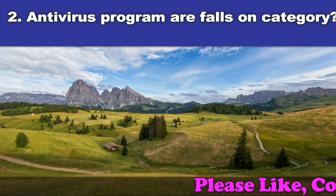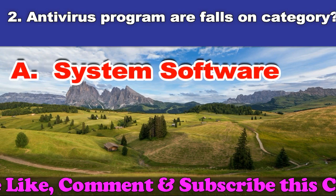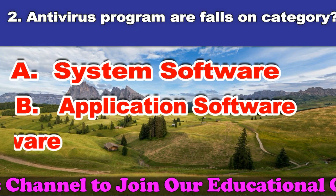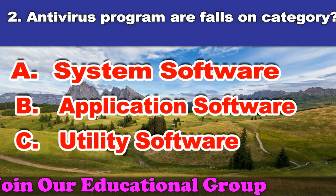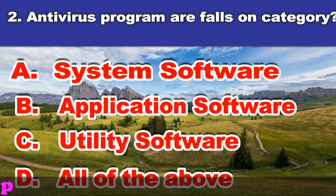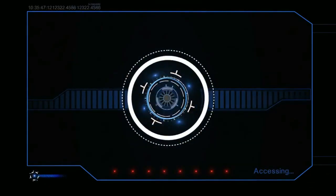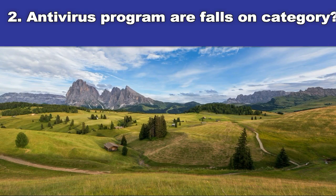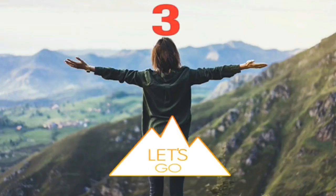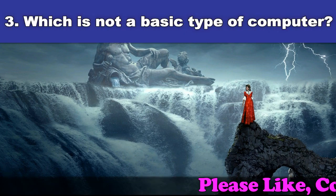Second question: Antivirus program falls in which category? A. System software. B. Application software. C. Utility software. D. All of the above. And the answer is utility software.